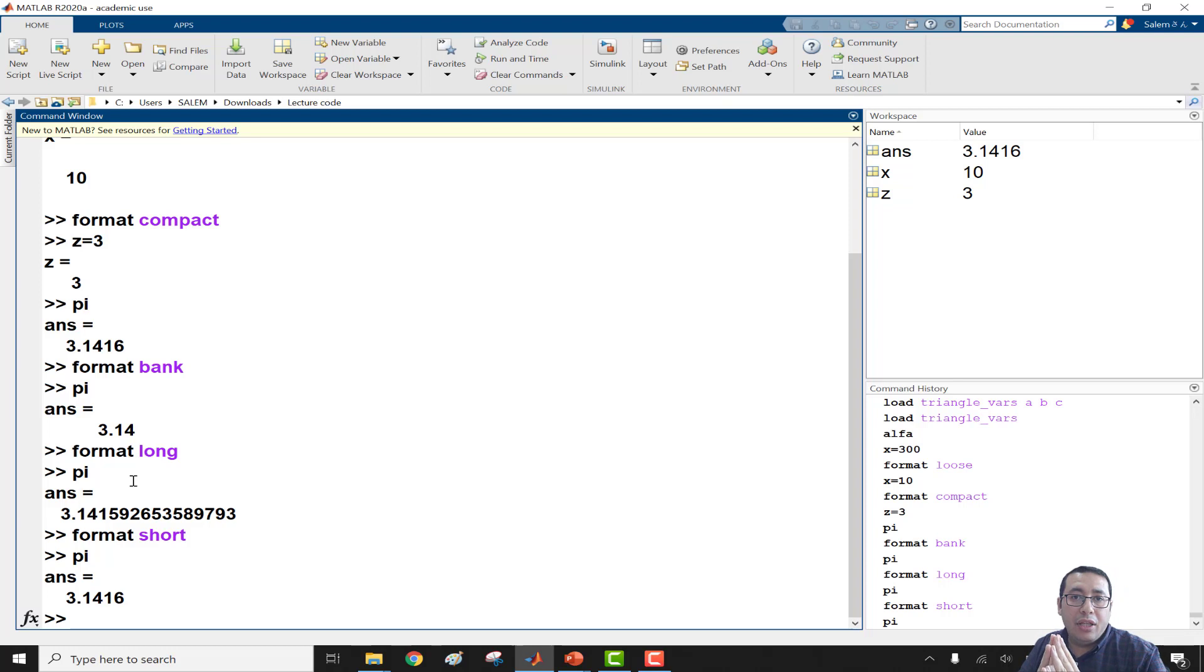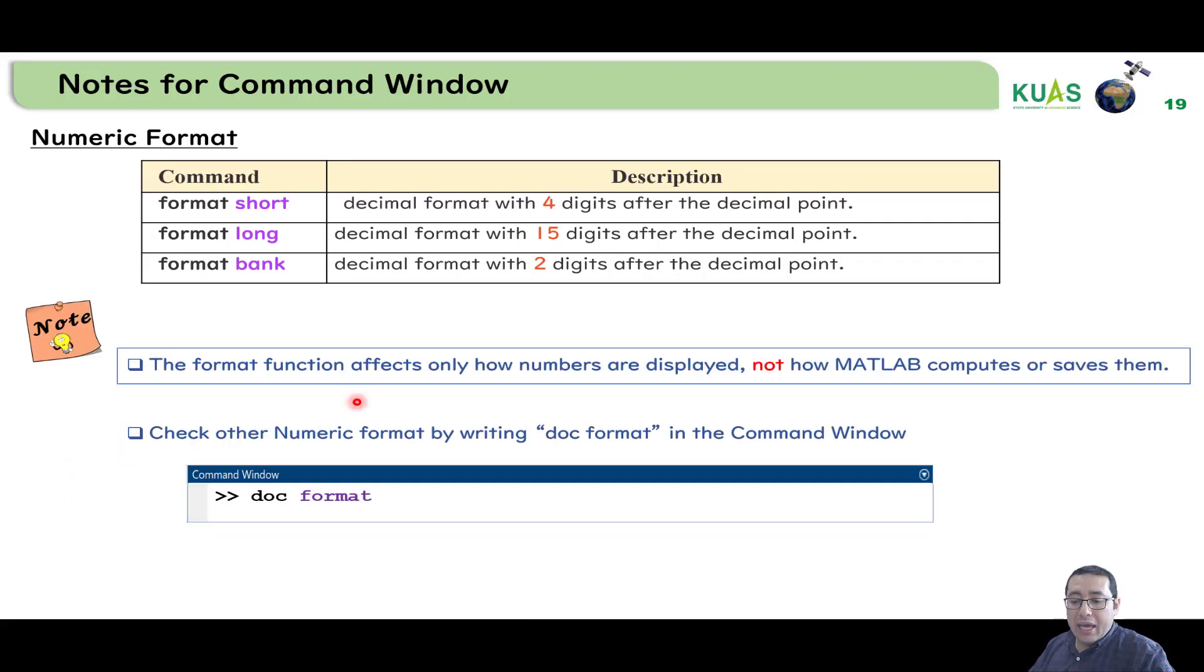Please remember, I will show that as a note. Please remember this format doesn't change the value for pi. It only changes the appearance of that, like how many digits after the decimal point. So it doesn't change how MATLAB saves or stores the value of pi. It's just a showing issue. The format function, as I mentioned, affects only how the numbers are displayed, not how MATLAB computes or saves them. It's just a display. How do you prefer your number be displayed for you?